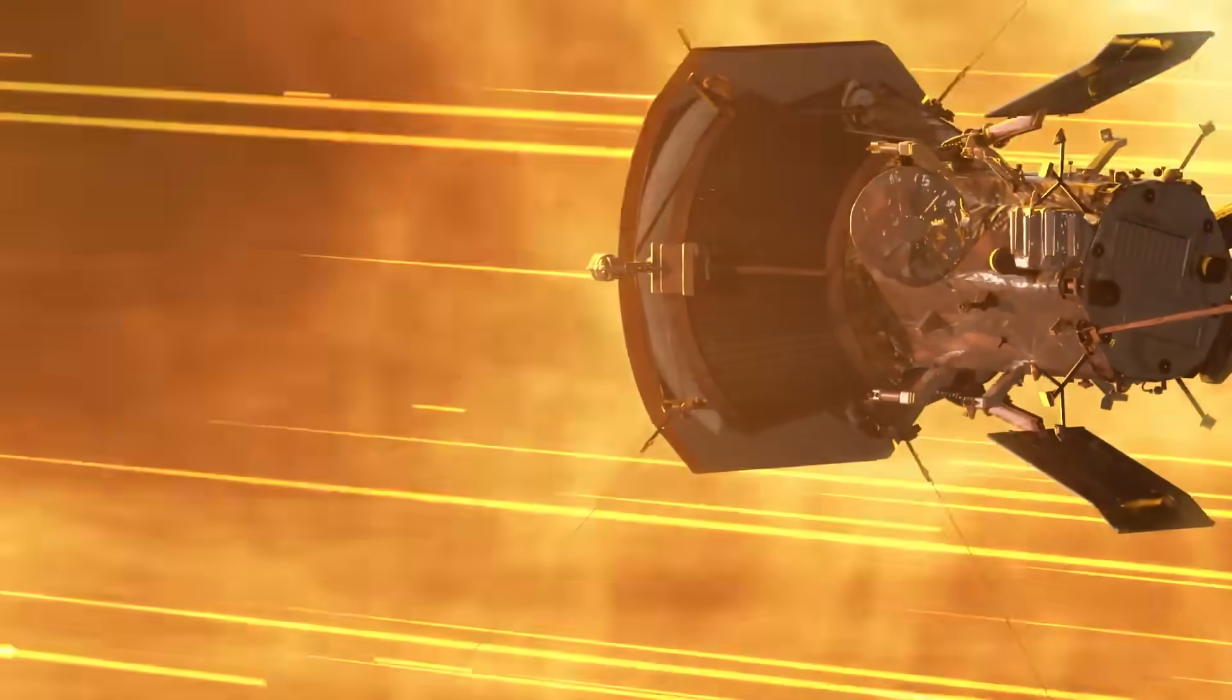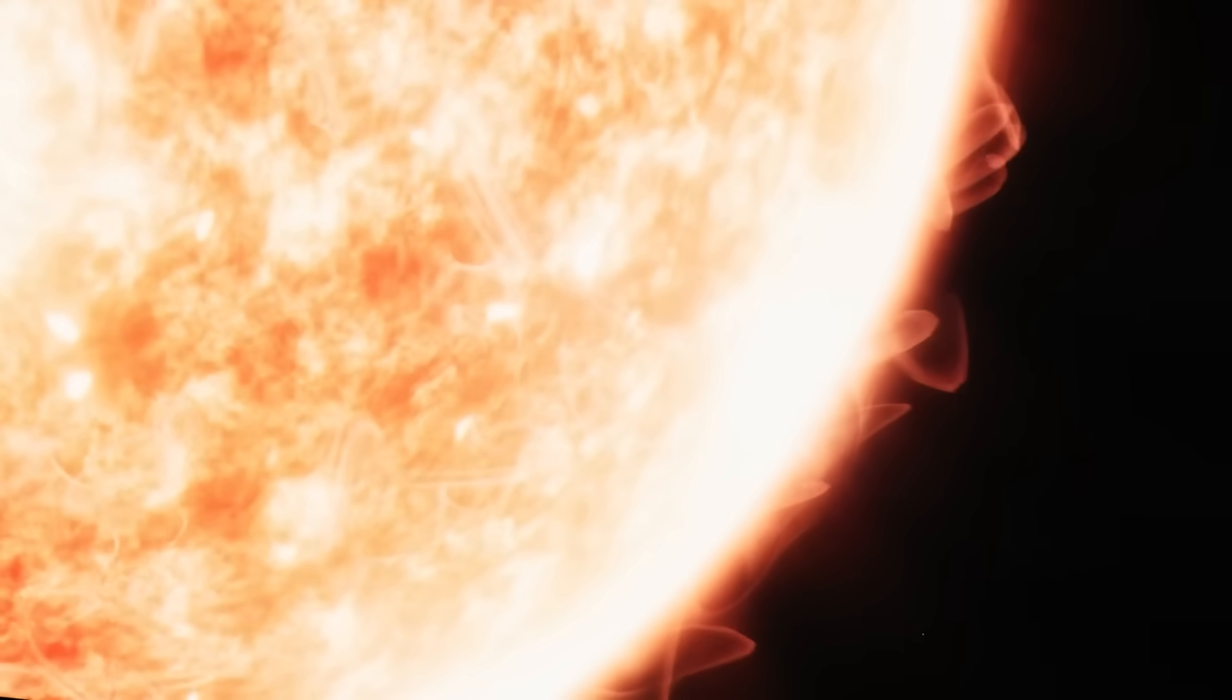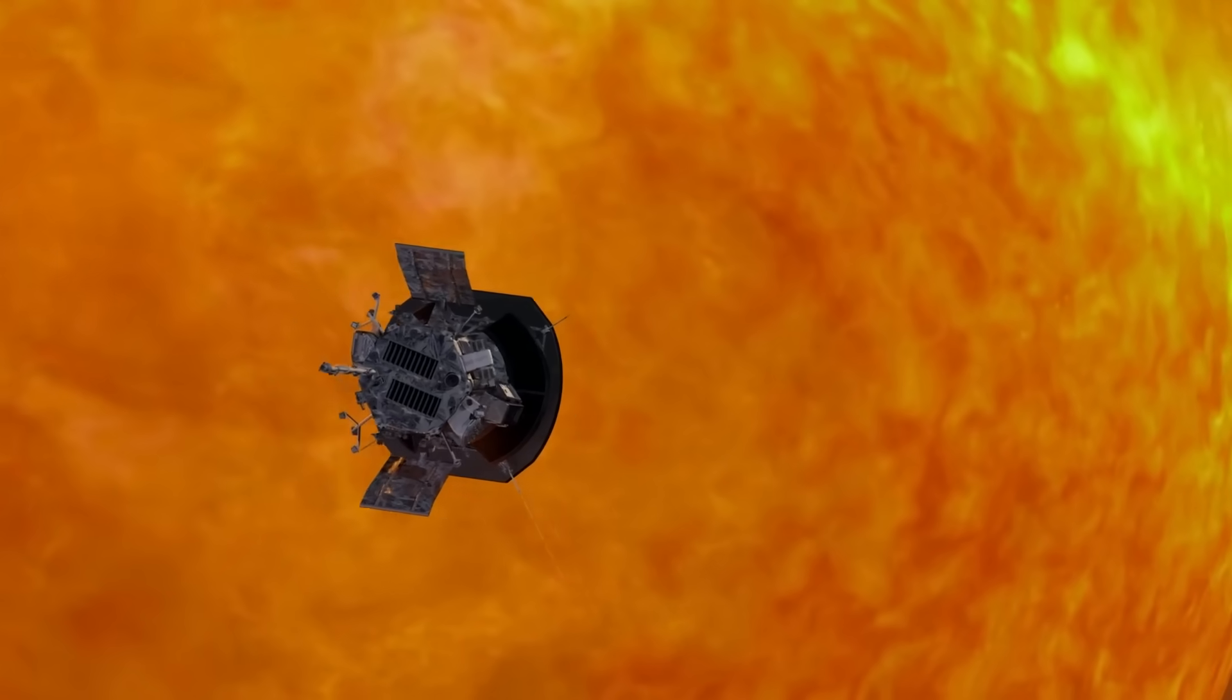NASA gave Parker a heat shield to survive the journey. But it may have needed something more. Permission. So now, the final files sit encrypted. A memory card carries the names of a million earthlings. And the sun, our sun, may never be seen the same way again.